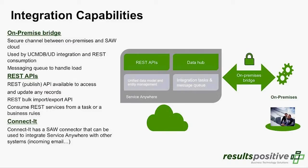From an integration capability perspective, there are a couple of different ways to integrate with Service Anywhere. It comes with an on-premise bridge, which allows you to build a secure connection between a targeted on-premise or hosted solution and Service Anywhere, enabling secure communications leveraging REST calls or other integration capabilities to exchange information back and forth. With Operations Orchestration, we're leveraging this on-premise bridge.